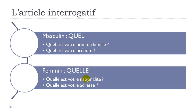For the same reason as previously — NOM and PRÉNOM were masculine words so you use the QUEL masculine form. Here, NATIONALITÉ and ADRESSE — meaning NATIONALITY and ADDRESS — are feminine words. So you will have to use the interrogative article in the feminine form: QUELLE EST VOTRE NATIONALITÉ? — What is your nationality?